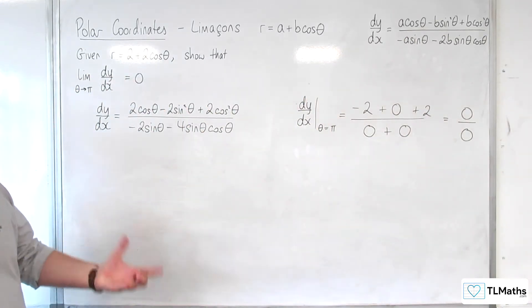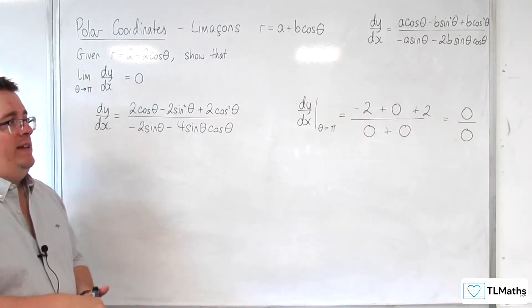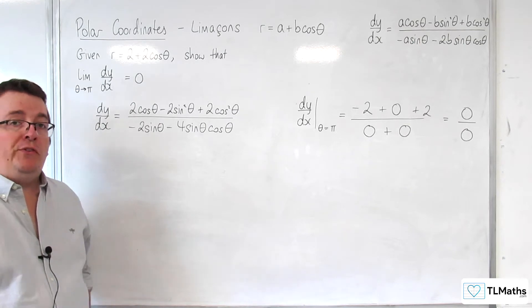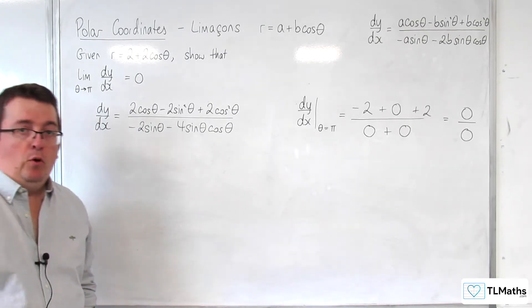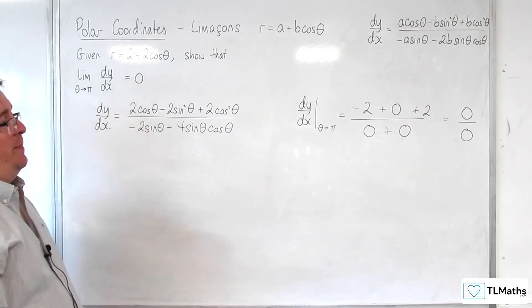So actually, at the point when theta is pi, we get 0 over 0. So it's an indeterminate point. We can't determine anything about it from that.